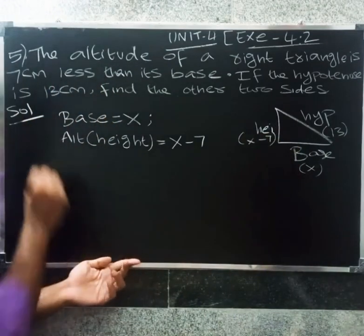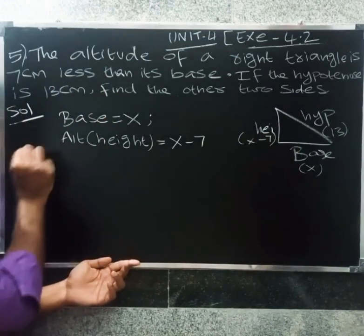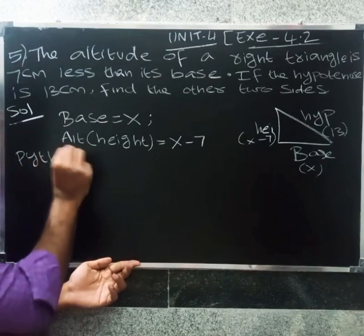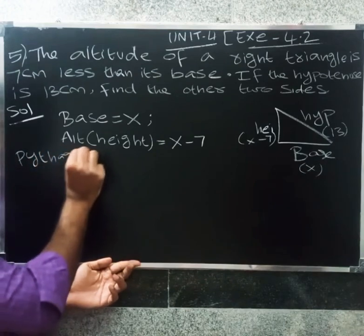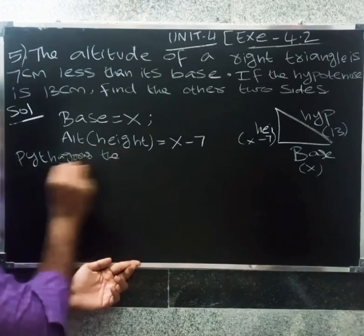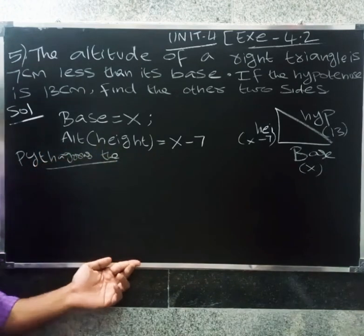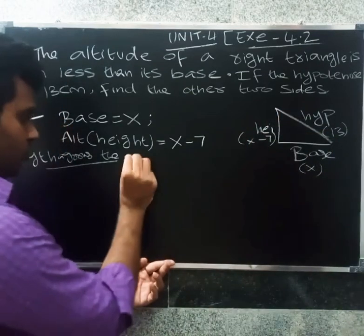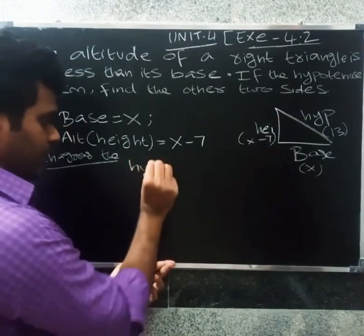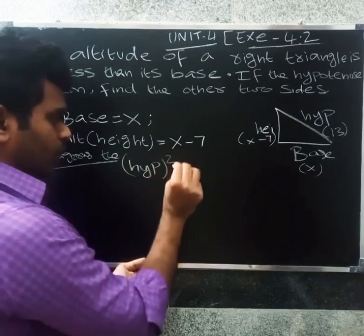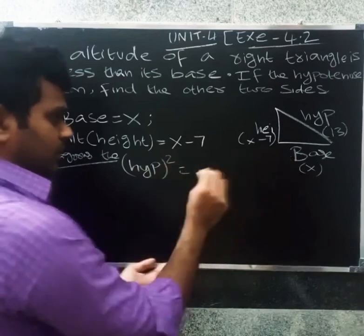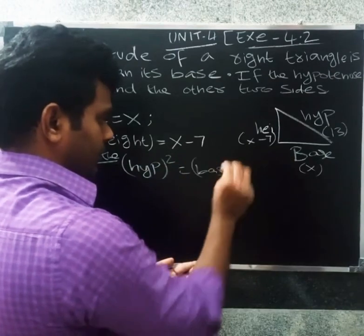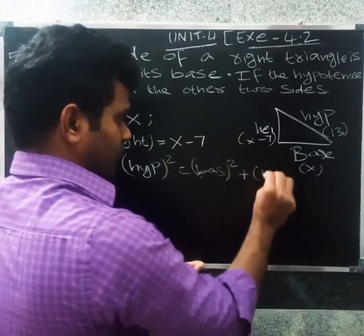We will apply the Pythagorean theorem. The Pythagorean theorem concept is: hypotenuse squared equals base squared plus height squared.